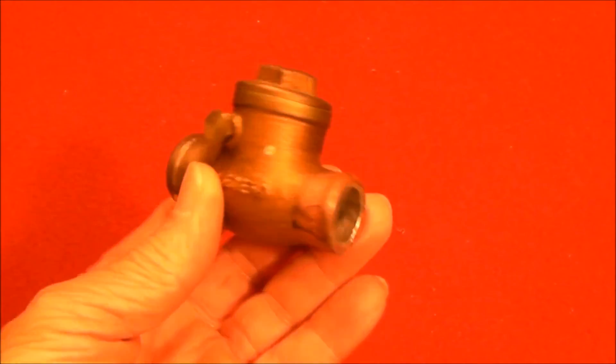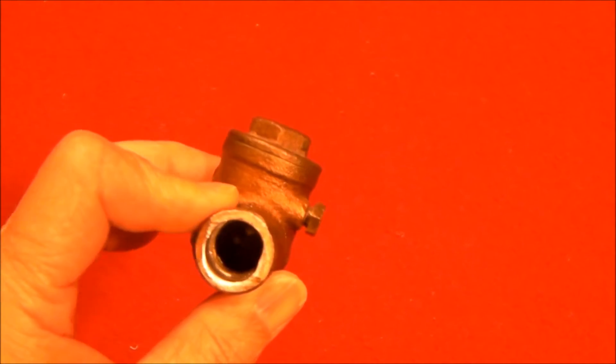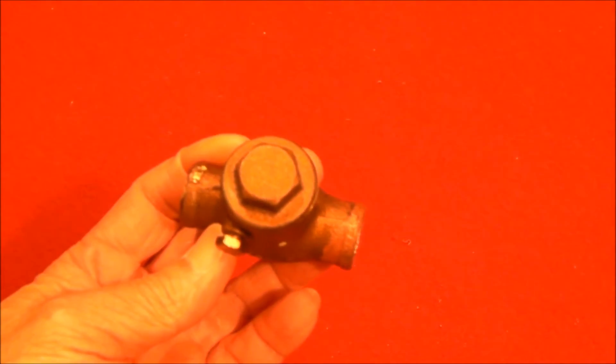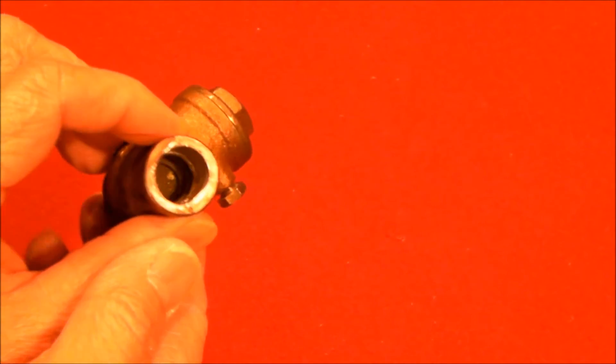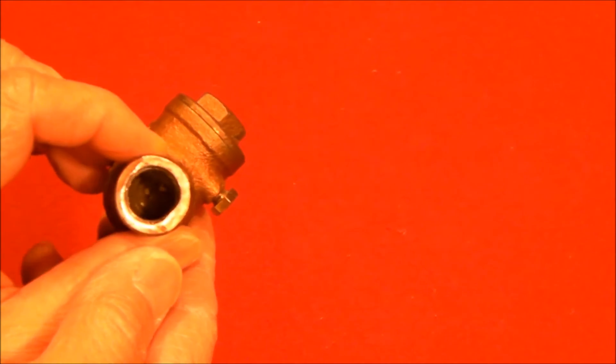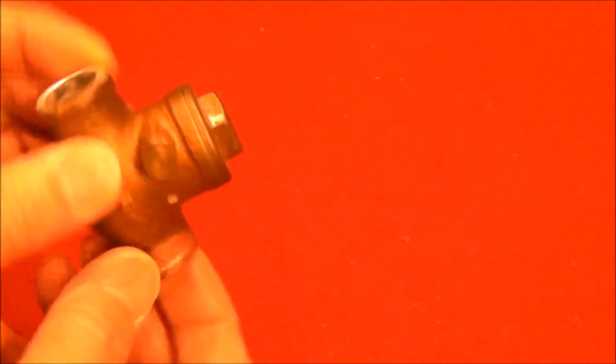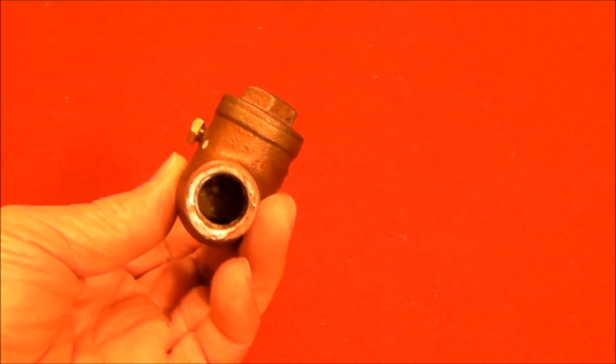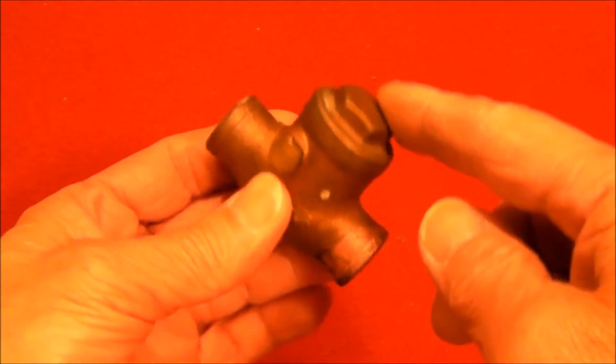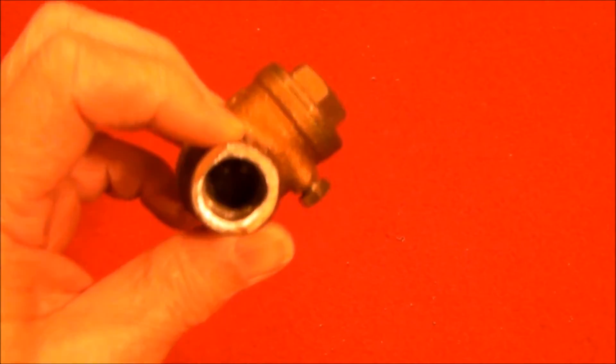I have the check valve out of the system and it's definitely stuck partially open. I can't move the flapper from either side. You can't really see very well down in there, but it's jammed in a partially open position. I'm going to try to get it apart and we'll take a look and see what's going on.